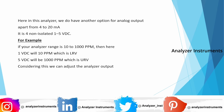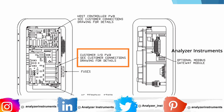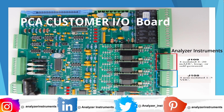Before adjusting the analog output, we will look at how the analog output board looks. The analog board is located in the lower compartment of the analyzer — as you may know, the analyzer has two compartments. This is how the analog board looks. Here we can see J109, which has 4 isolated 4-to-20 milliamp outputs that can be self-powered or loop-powered as per our requirement. We also have J108 terminal, which is for 4 non-isolated voltage DC outputs.